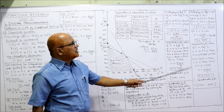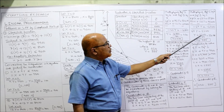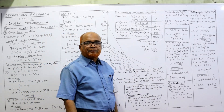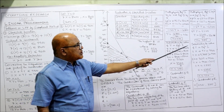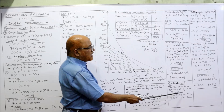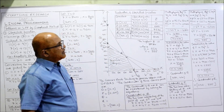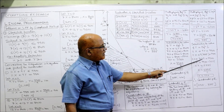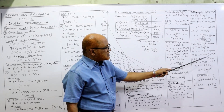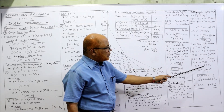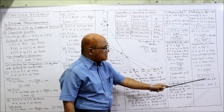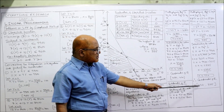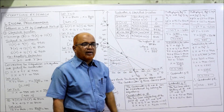So 69y = 23100, giving y = 23100 / 69 = 334.78, which we round to 335. Substituting y = 335 into the first equation: 11x + 9 × 335 = 9900, so 11x + 3015 = 9900. Taking 3015 to the right: 11x = 6885, so x = 626. The coordinates of R are (626, 335).